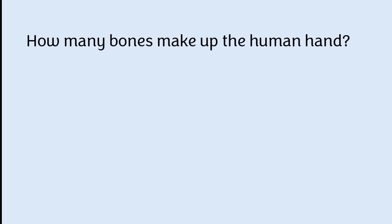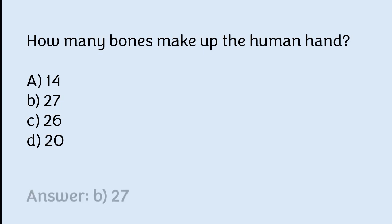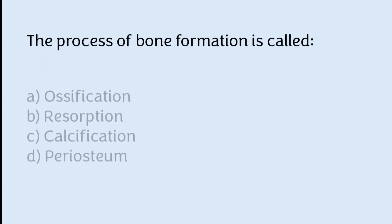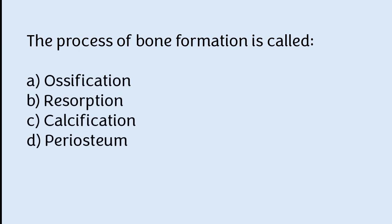How many bones make up the human hand? 14, 27, 26, or 20. The correct answer is option B — there are 27 bones in the human hand. The process of bone formation is called ossification.